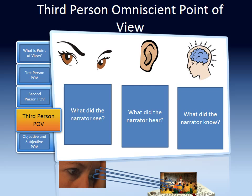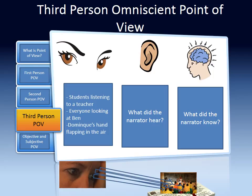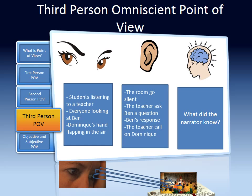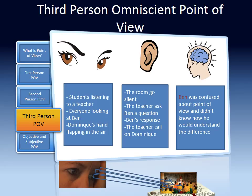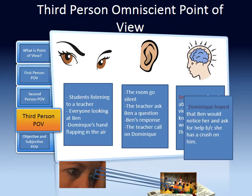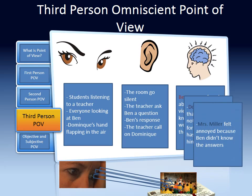Let's think about what the narrator saw. Once again, the narrator saw all of the students listening to a teacher. The narrator saw everyone look at Ben and Dominique's hand flapping in the air. What did the narrator hear? The narrator heard the room go silent, the teacher asked Ben a question, Ben's response, and the teacher call on Dominique. Now let's examine what the narrator knew. This is where we're going to see the difference between a limited point of view and an omniscient point of view. The narrator knew that Ben was confused about point of view. In this scenario, the narrator knew that Dominique hoped that Ben would notice her and ask for help because she had a crush on him. The narrator knew that Mrs. Miller felt annoyed because Ben didn't know the answers. The narrator knew that Ben was confused about the answers.